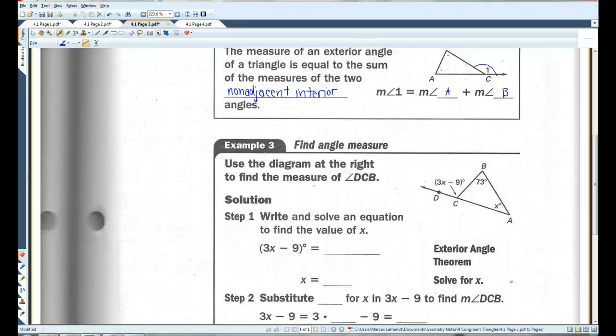Find angle measure. Use the diagram at the right to find the measure of angle DCB. Now, as you know, as we just learned, this angle is equal to the sum of the two non-adjacent interior angles. So, if I add these two angles together, I'm going to get this angle here. So, 3x minus 9 equals 73 plus x. Now, if we go about solving for x, if I subtract x from both sides, I'm going to get 2x minus 9 equals 73. If I add 9 to both sides, 2x equals 82 divided by 2. x equals 41.